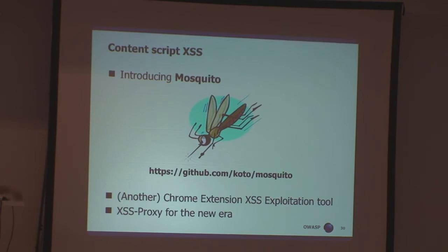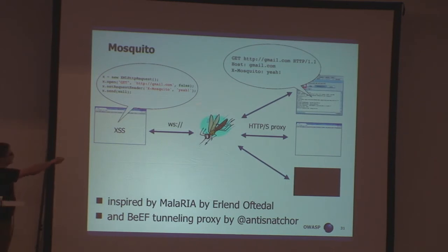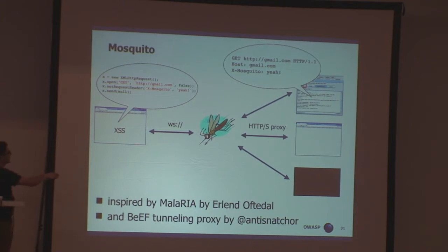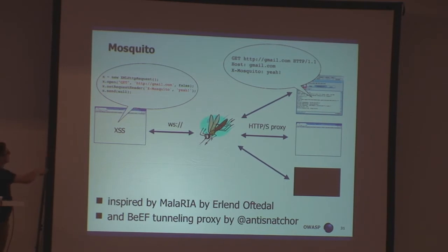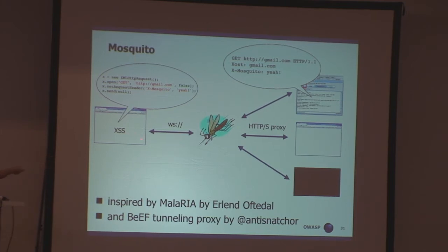It's called Mosquito — yet another Chrome extension exploitation tool, basically an XSS proxy for the new era. The architecture is like this: you set up an HTTPS proxy and as an attacker you connect to it from Burp, SQLmap, your browser, whatever. There's a payload to inject into your victim's browser. You send commands via the usual HTTP proxy protocol, and over WebSockets protocol they are transferred to the XSS content script, which makes XMLHttpRequests. The browser attaches the appropriate cookies, so I can read your Gmail accounts and whatnot via this exploited extension.